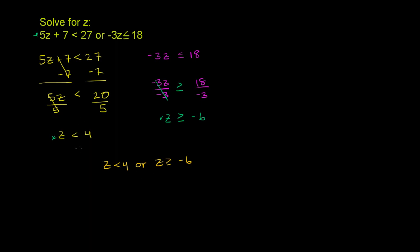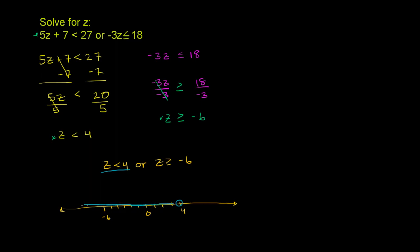Let's plot these on a number line. With 0 in the middle, 4 is to the right and negative 6 is to the left. For z less than 4, we put an open circle at 4 and shade everything to the left — everything less than 4. For z greater than or equal to negative 6, we include negative 6 with a filled circle and shade everything to the right of it, including 4 and beyond. So we've essentially shaded the entire number line.